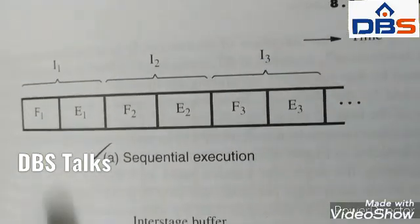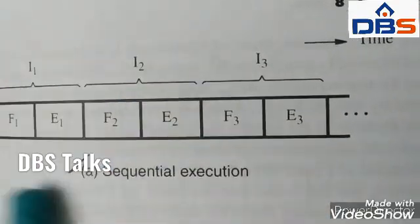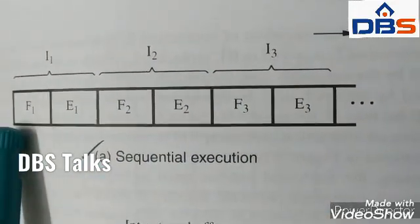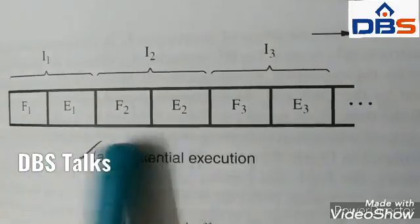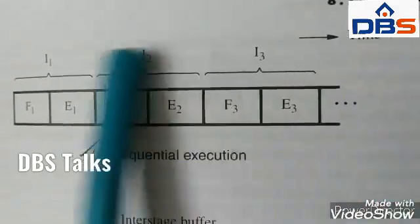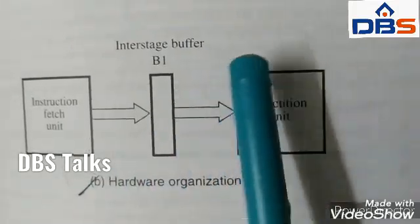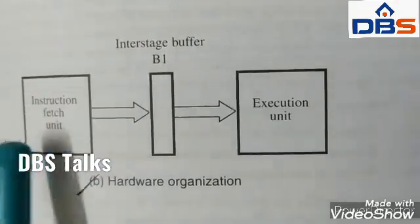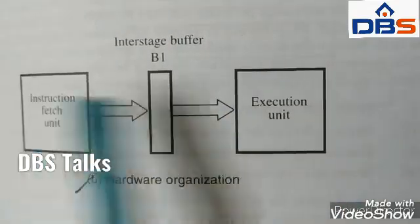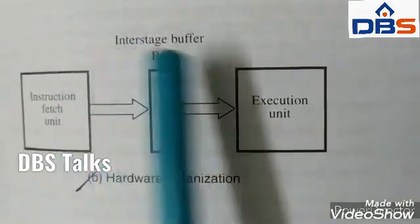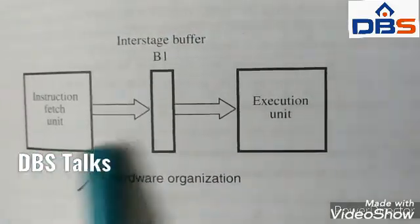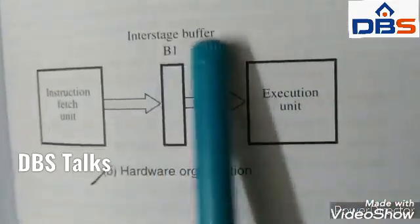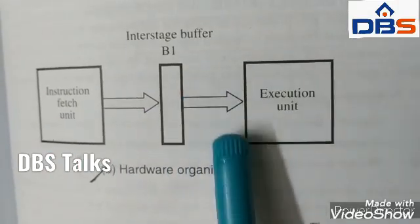Here are the basic concepts. This shows the sequential execution of instructions i1, i2, and i3 — fetch, execution, fetch, execution, fetch, execution — this is serial execution. For the hardware organization of pipelining, the first unit is the instruction fetch unit, then the execution unit, with an interstage buffer in between. In the first cycle, the instruction is fetched and stored; in the second cycle, it is executed. This is very important for the pipelining process.